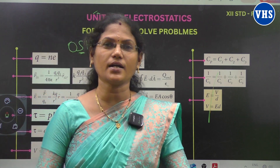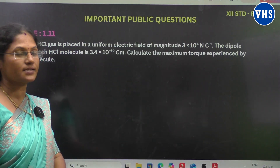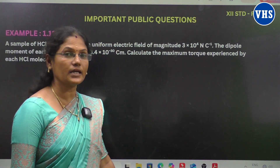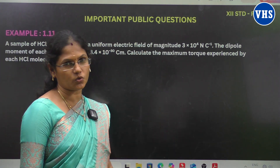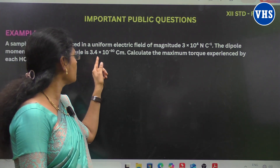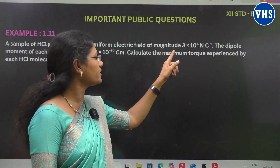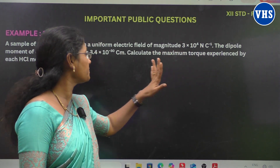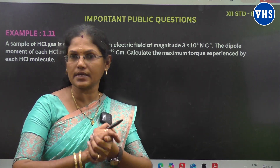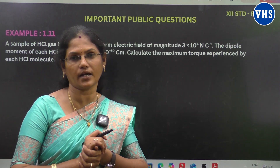Now we start the first numerical problem. A sample of HCl gas is placed in a uniform electric field of magnitude 3 × 10⁴ Newton per Coulomb. The dipole moment of each HCl molecule is 3.4 × 10⁻³⁰ Coulomb meter. Calculate the maximum torque experienced by each HCl molecule.